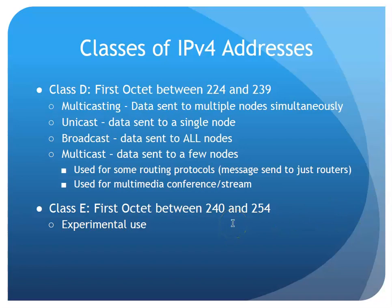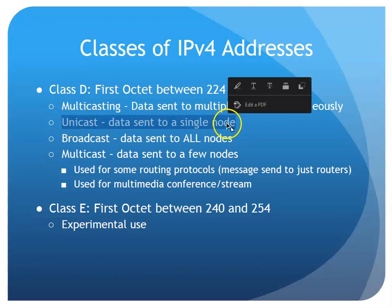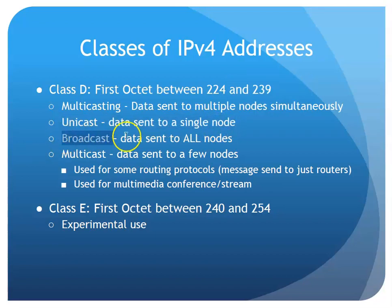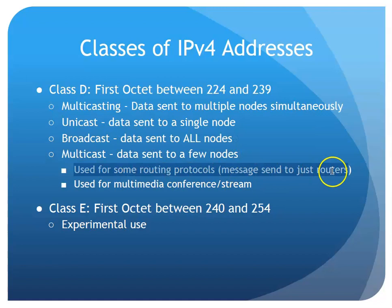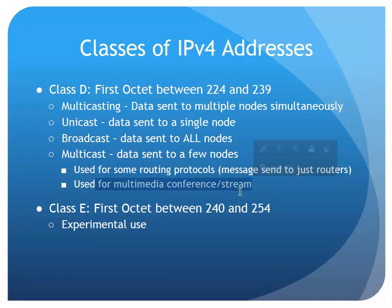Class D was set aside for multicasting purposes — routing protocols and other things use multicasting on a network. A unicast is a message sent to one and only one node. A broadcast is a message sent to everybody on the network — like saying 'I'm looking for a DHCP server, does anybody know where it is?' A multicast is a way to get a message to a group of people. For example, if three of us in a company subscribe to a product release stream, we would belong to a multicast group that routers and switches know how to handle.